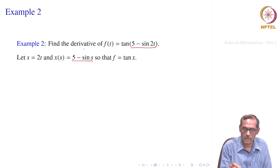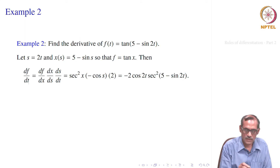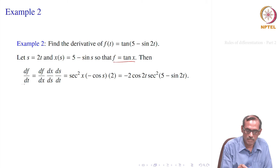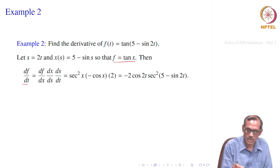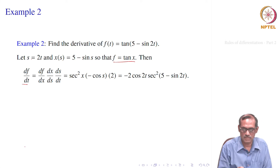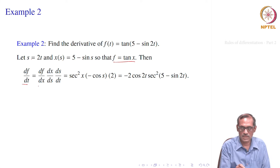Now you have 3 compositions. We can directly differentiate 5 minus sin s. So df/dt, which is our interest to find: df/dt equals df/dx — f is a function of x — times dx/ds — x is a function of s — times ds/dt. That is how the chain rule is applied in succession.